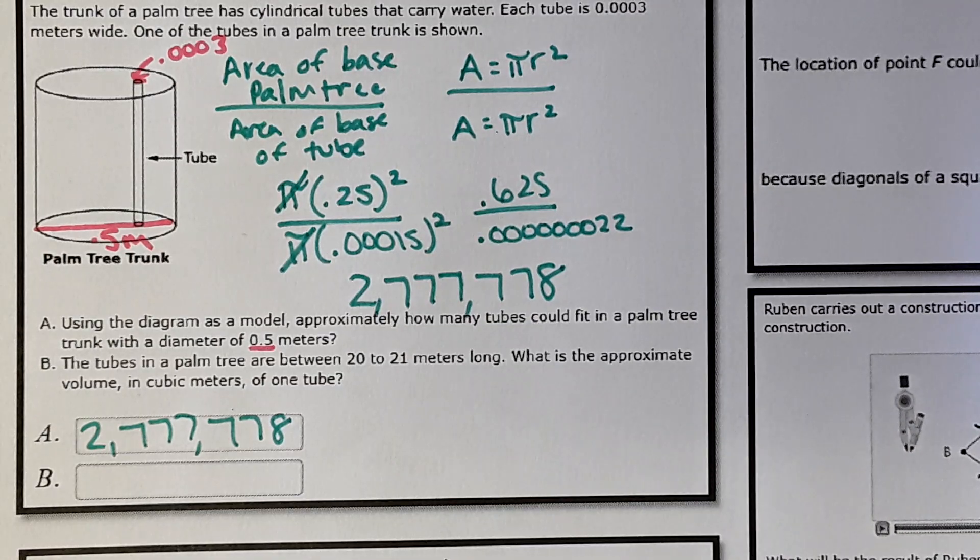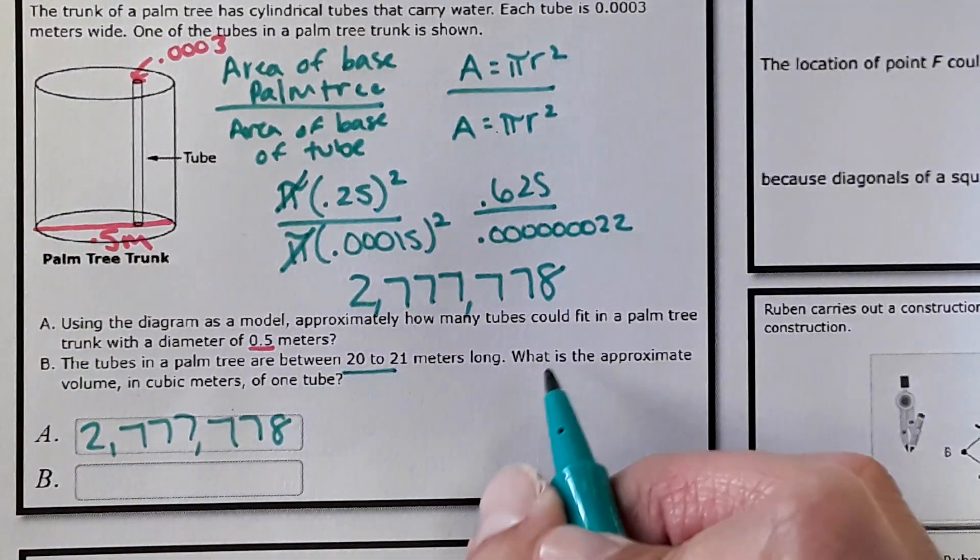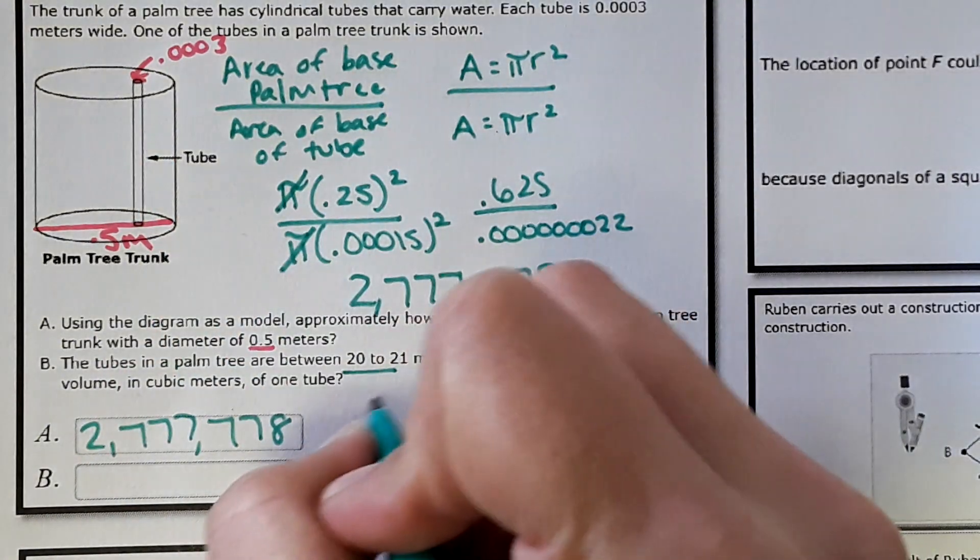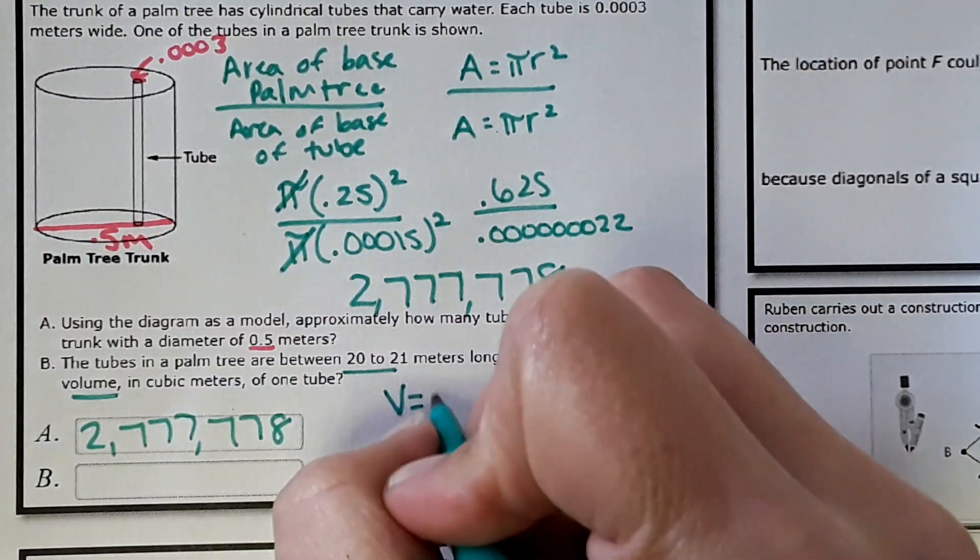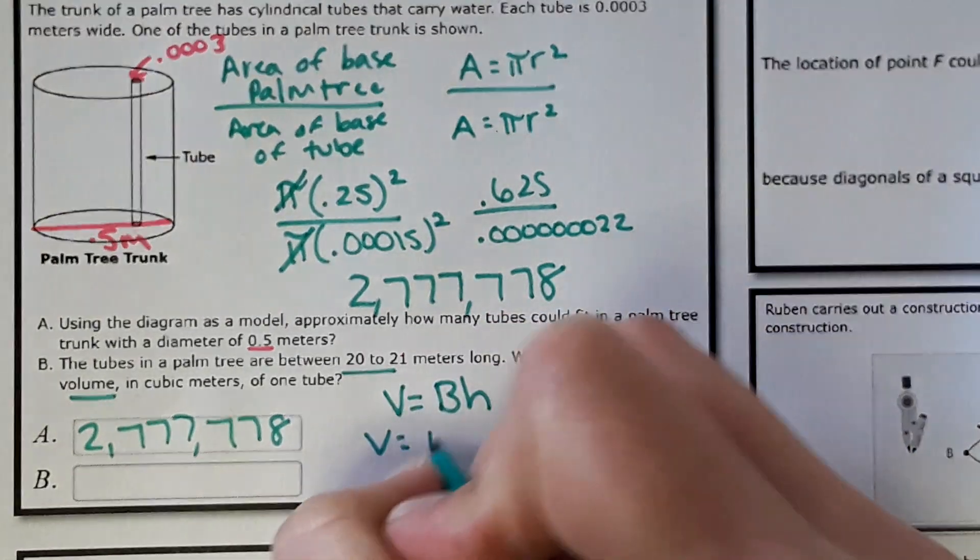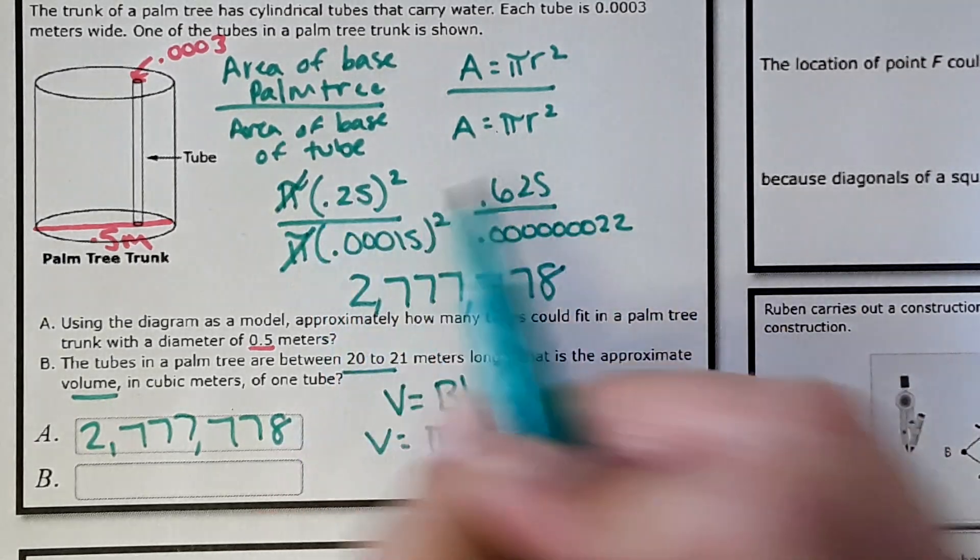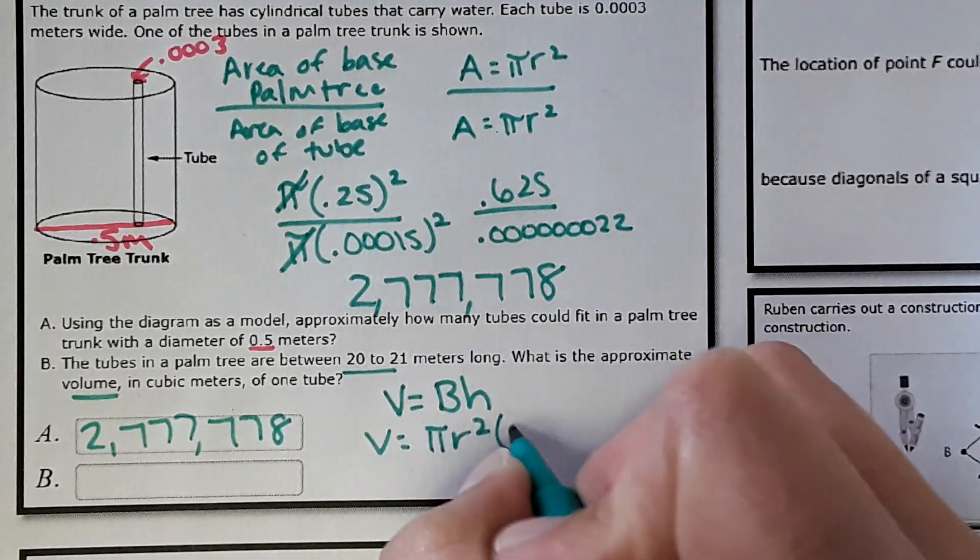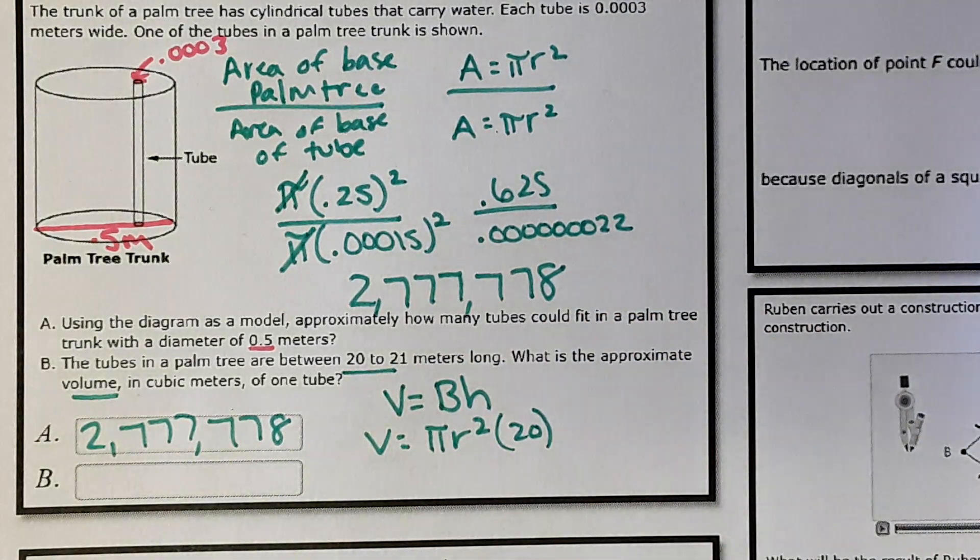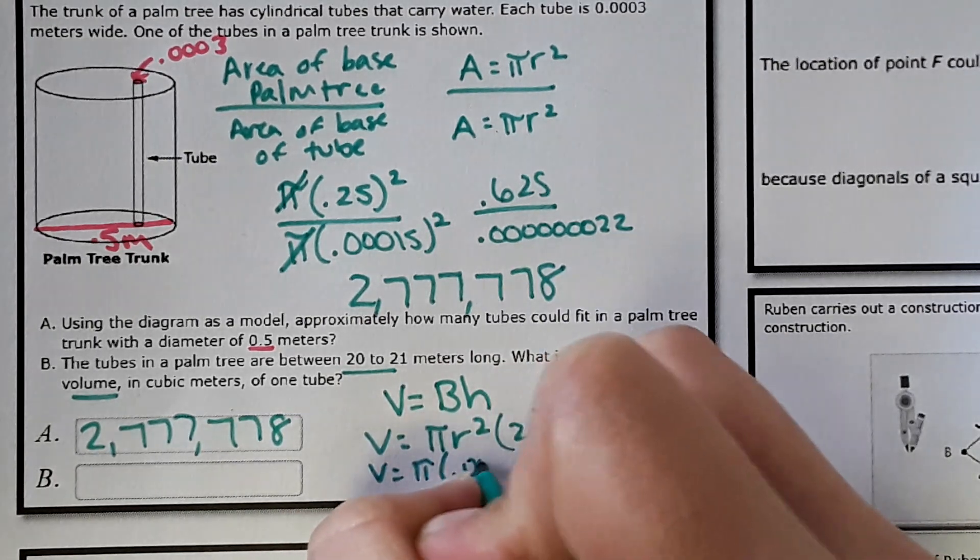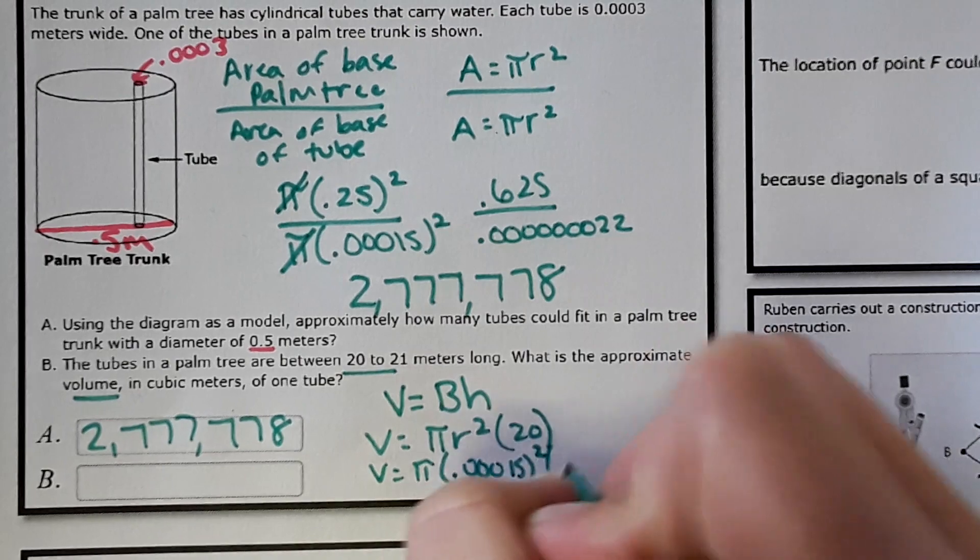Okay, part B. The tubes in the palm tree are between 20 to 21 meters long. What is the approximate volume in cubic meters of one tube? Well, the tube is a cylinder. Volume is asking for is area at the base of the cylinder times the height. The area at the base, we just, well, we didn't quite solve it out over here. So pi r squared for area at the base times the height. It says 20 to 21. We'll just use 20 because it's an easy number to work with. And then radius 0.00015 squared times 20.